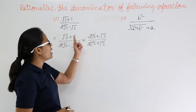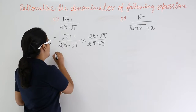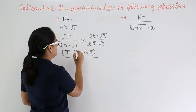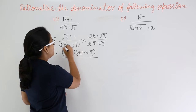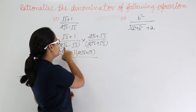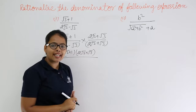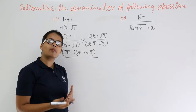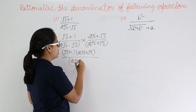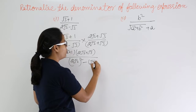Now you will multiply the two numerators as well as the two denominators. You can see in the denominator: 2 root 2 and 2 root 2, root 3 and root 3 — this is the form a minus b times a plus b. So you can directly write this as a squared minus b squared. Here a is 2 root 2, so a squared, and b is root 3, so root 3 whole squared.